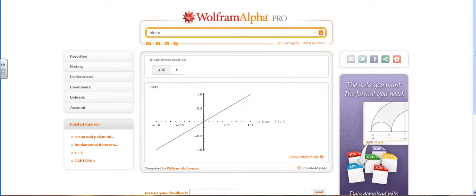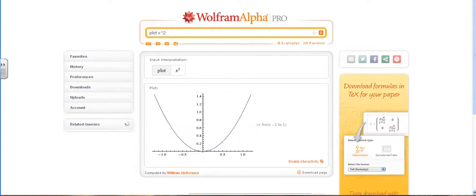The quadratic function, say x squared, is also easy. Wolfram Alpha returns the plot of this function.